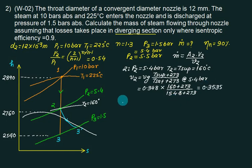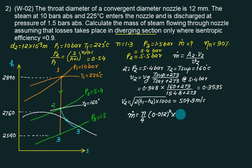V2 equals to under root of 2 times H1 minus H2 multiplied by 1000. Next is M dot. Put this value back and find out M dot. Area is pi D squared by 4. Diameter is 12, velocity is 509, divided by specific volume 0.3535.